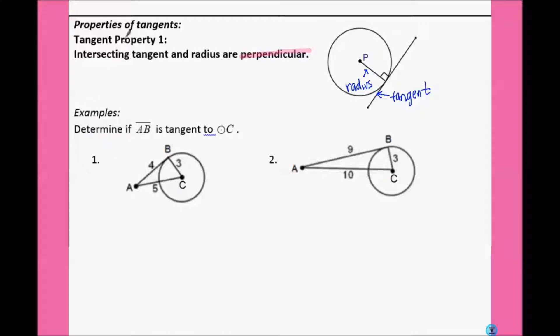So in these examples, we're going to determine if AB is tangent to circle C. We know BC is our radius because it goes from the center to the outside, and AB is what we're trying to determine if it's tangent. If it is, that means that this has a right angle, which would make this a right triangle. So we're going to use our Pythagorean theorem.